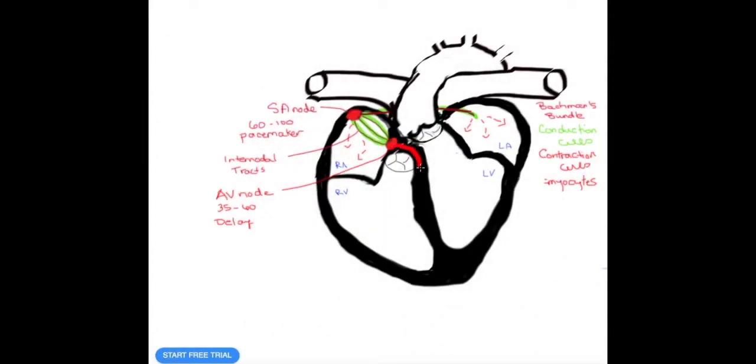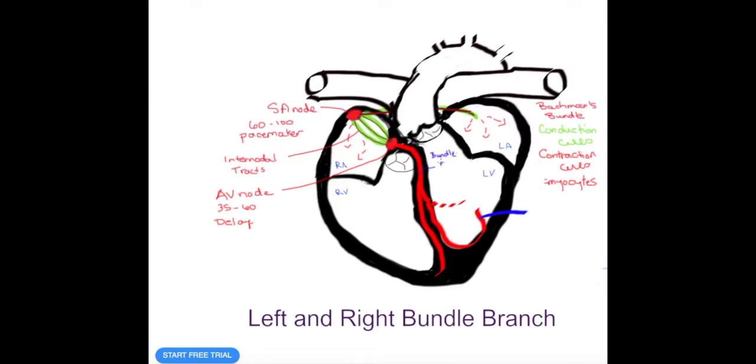Once past the AV node it enters into the bundle of His. So the bundle of His branches off into a right and left bundle branch. The left sided bundle branch further breaks off into an anterior and posterior fascicle. At the end of all of these branches we have the Purkinje fibers.